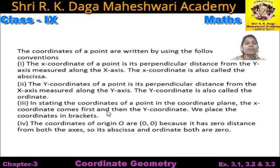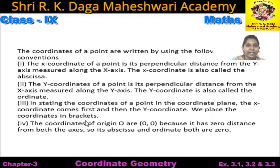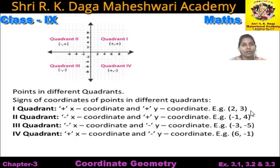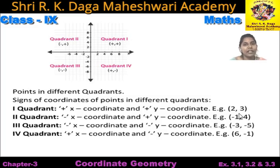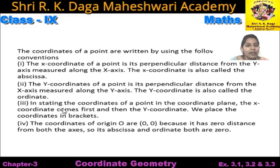In stating the coordinate of a point in the coordinate plane, the x coordinate comes first and then the y coordinate. We place the coordinates in brackets. X coordinate ki value ko hum pehle likhte hain, y coordinate ki value ko hum baad mein likhte hain. In dono ko hum is tarah se bracket mein likhte hain, jo ki kehlataa hai ordered pair. Yeh coordinate jo hum bracket mein show karte hain, yeh x coordinate aur y coordinate ka ordered pair hai.